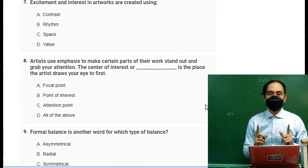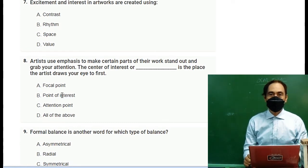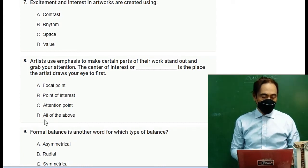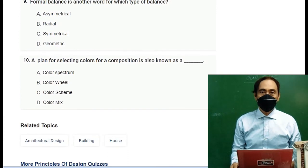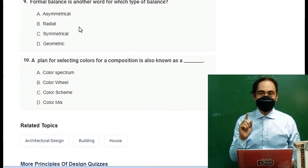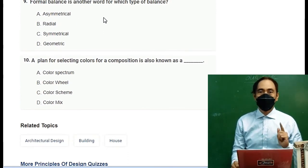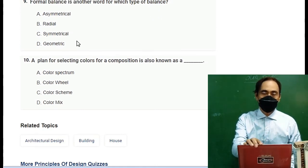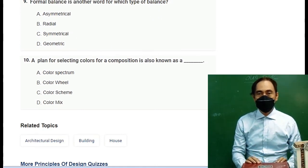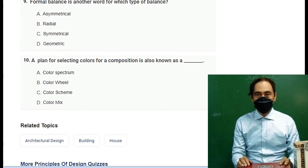Number eight: Artists use emphasis to make certain parts of their work stand out and grab your attention. The center of interest is the place an artist draws your eyes to first. A. focal point, B. point of interest, C. attention point, D. all of the above. Number nine: Formal balance is another word for which type of balance? A. asymmetrical, B. radial, C. symmetrical, D. geometric. Select the correct answer.